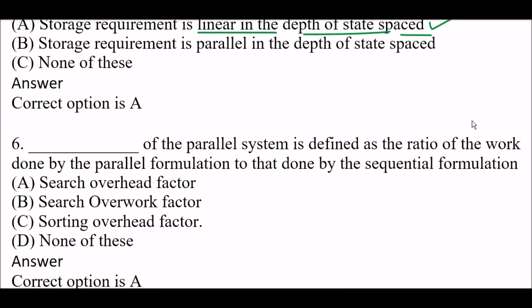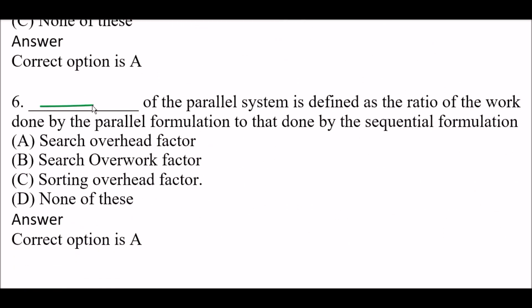Next question: The blank of the parallel system is defined as the ratio of the work done by the parallel formulation to that done by the sequential formulation. Option A: Search overhead factor. Option B: Search overwork factor. Option C: Sorting overhead factor. Option D: None of these. The right answer is Option A — search overhead factor.